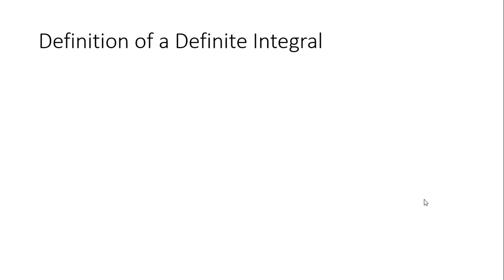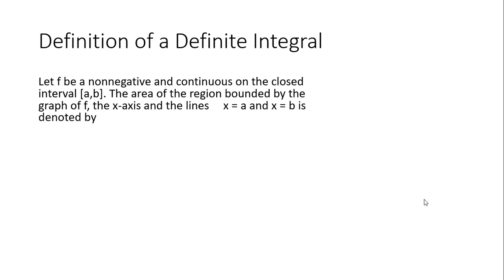This is when we have an idea called the definite integrals. That means we're defining it from specific points. So you're going to let f be a non-negative and continuous on the closed interval [a,b]. The area of the region bounded by the graph of f, the x-axis, and the lines x = a and x = b is denoted by